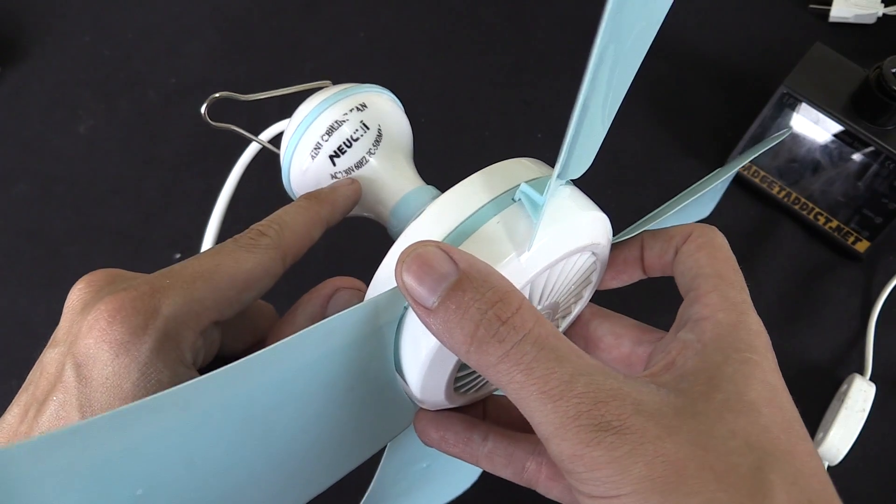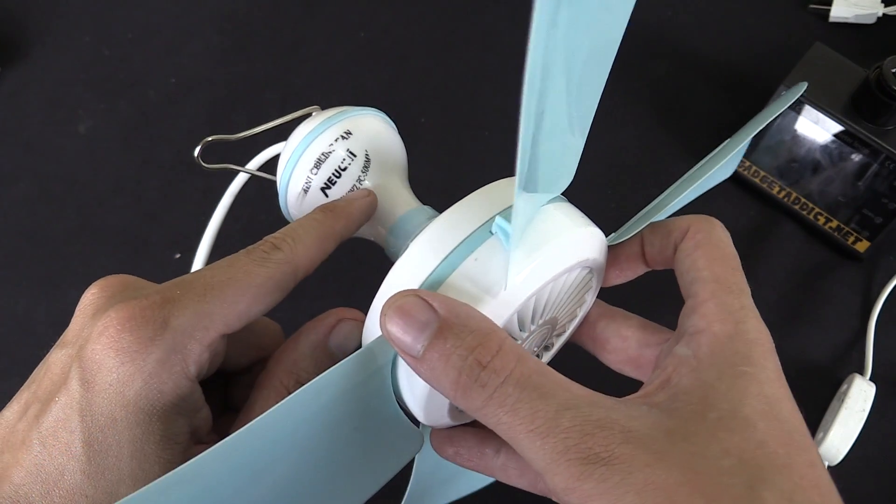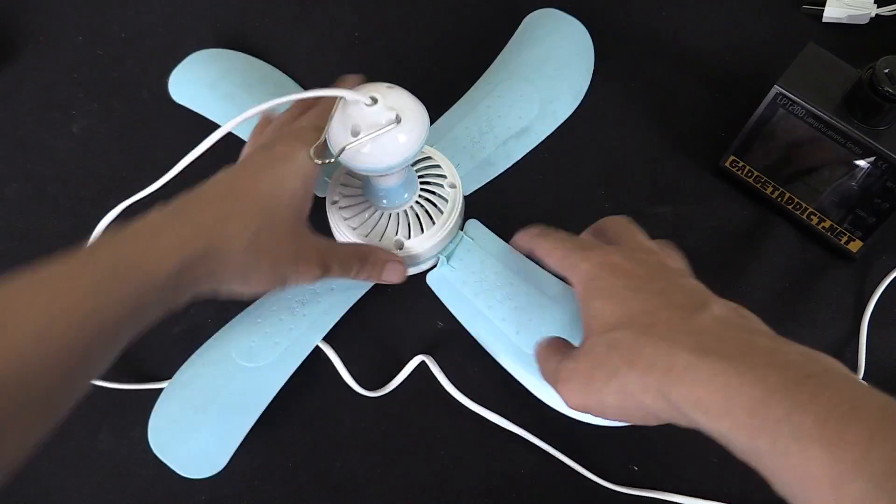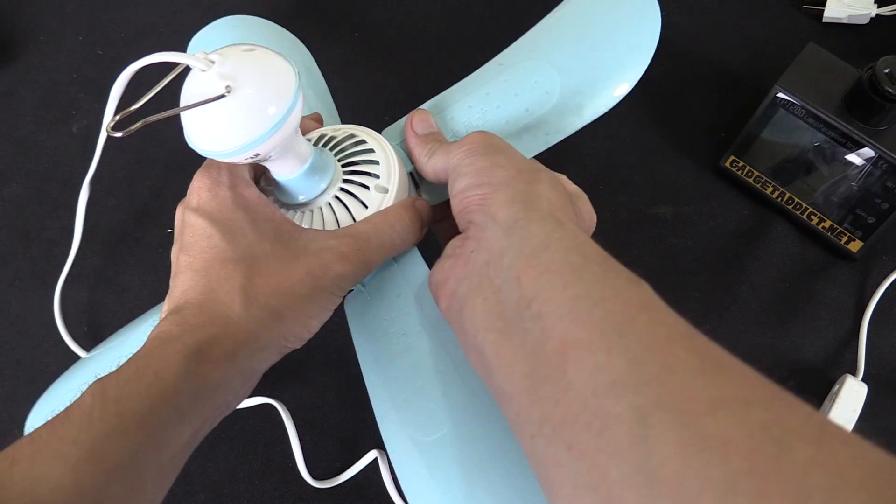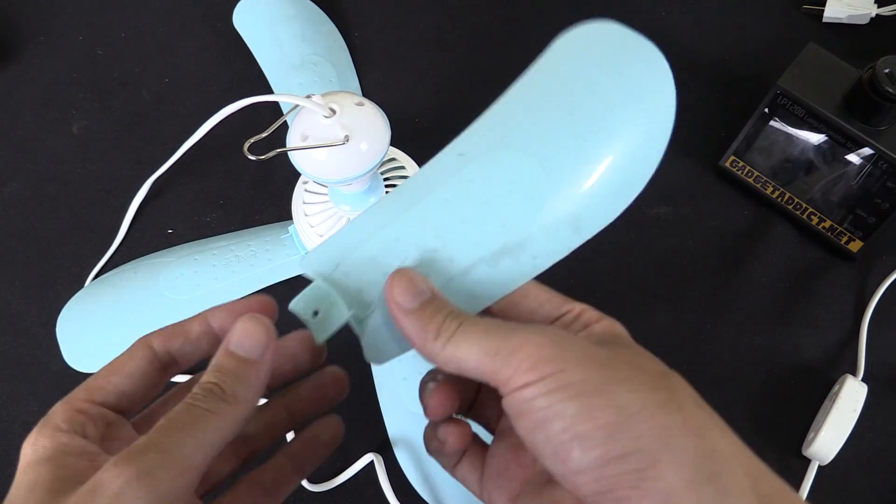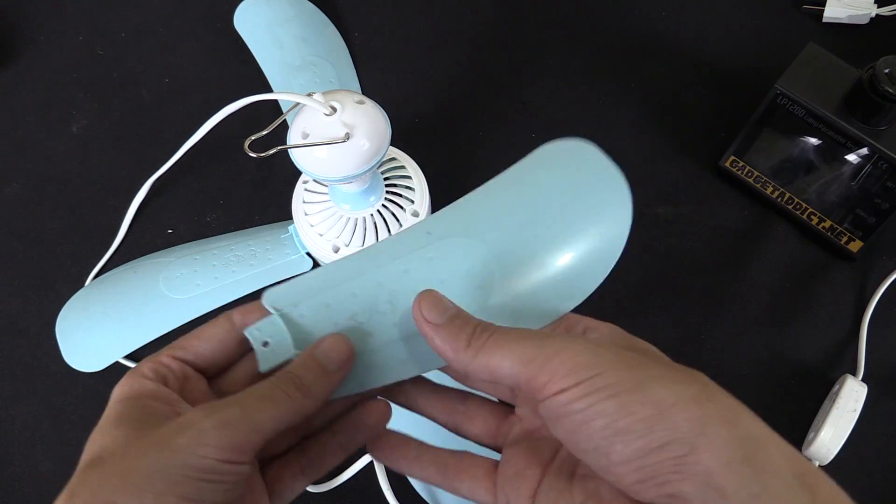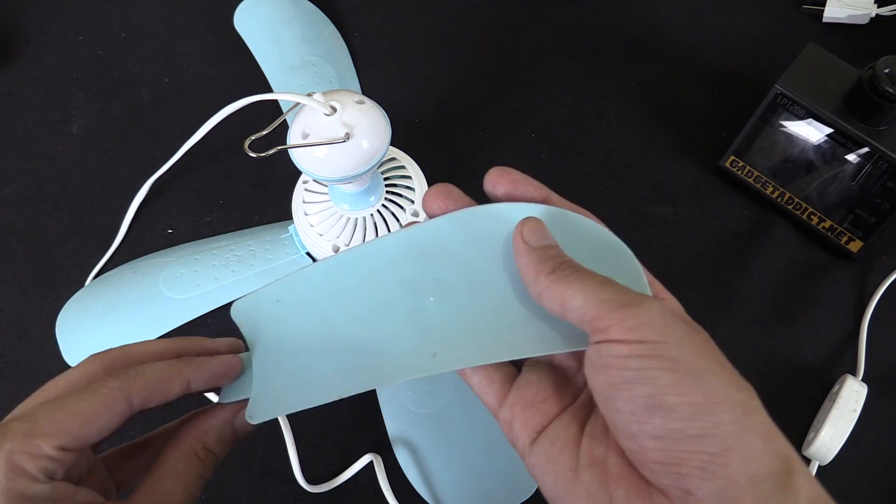All it says on here is AC 230 volts, 60 hertz, and then 500 millimeters, which I assume is edge to edge on these fan blades. Now, these blades literally just push in and pull out like that. They're very flimsy, cheap plastic, but they only have to move a little bit of air, so they work okay.